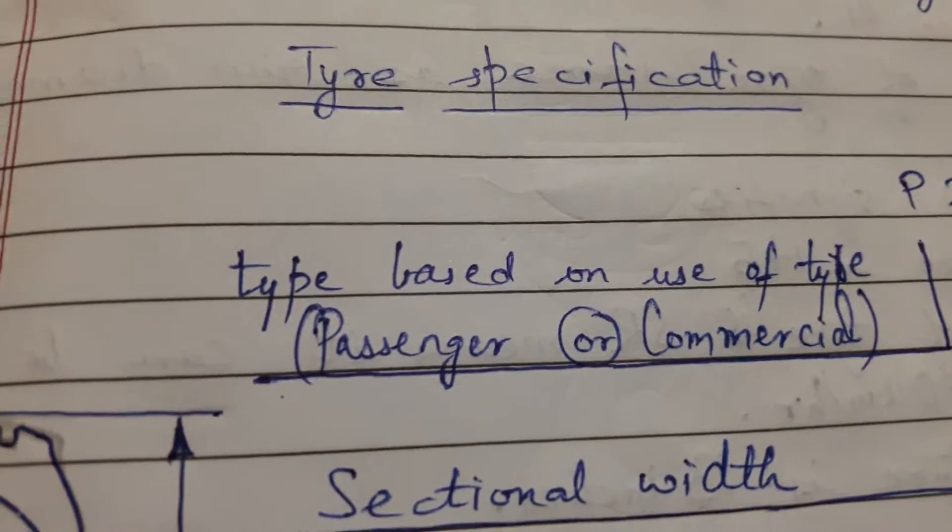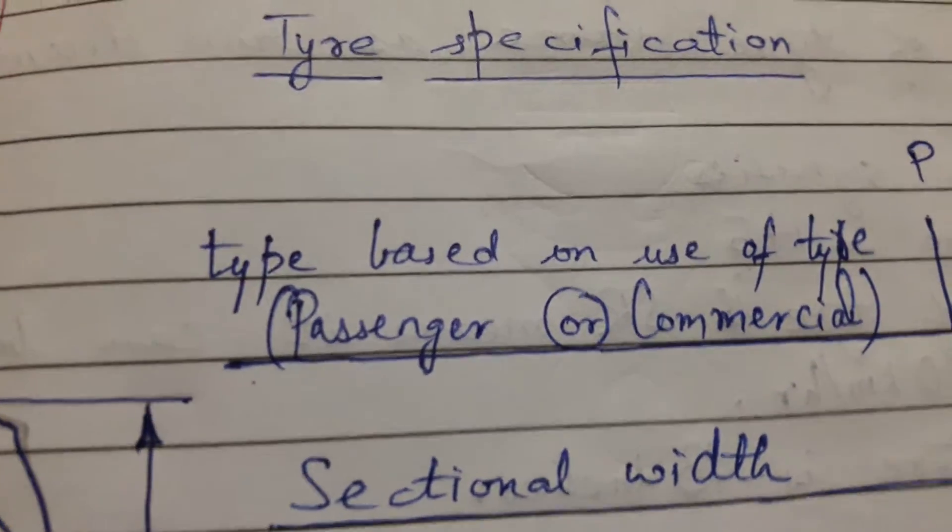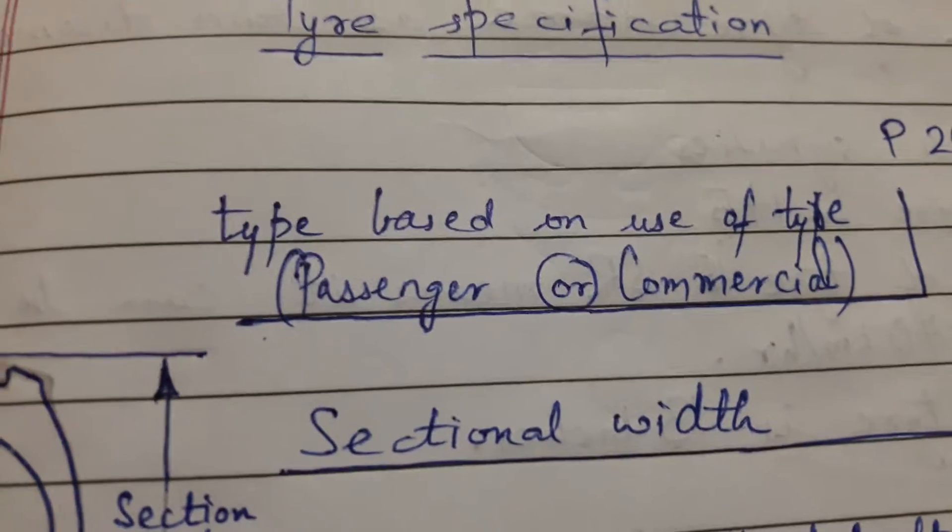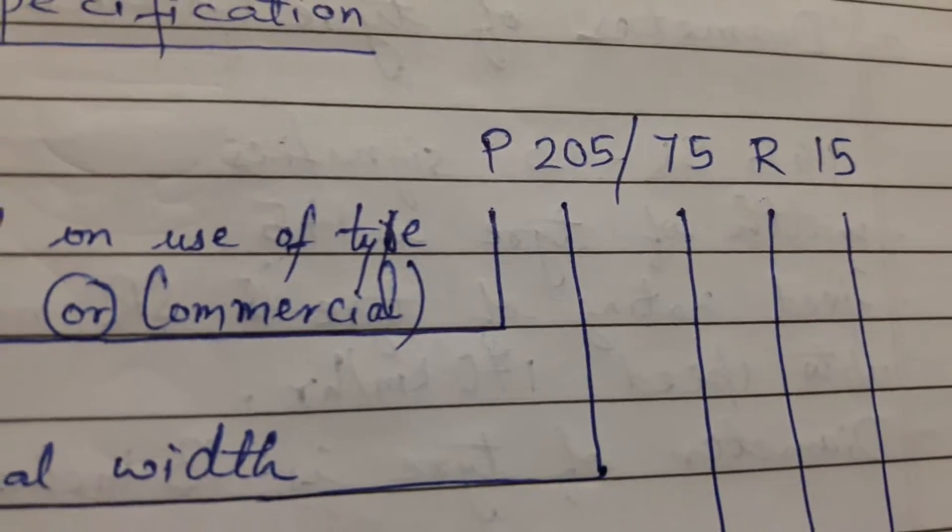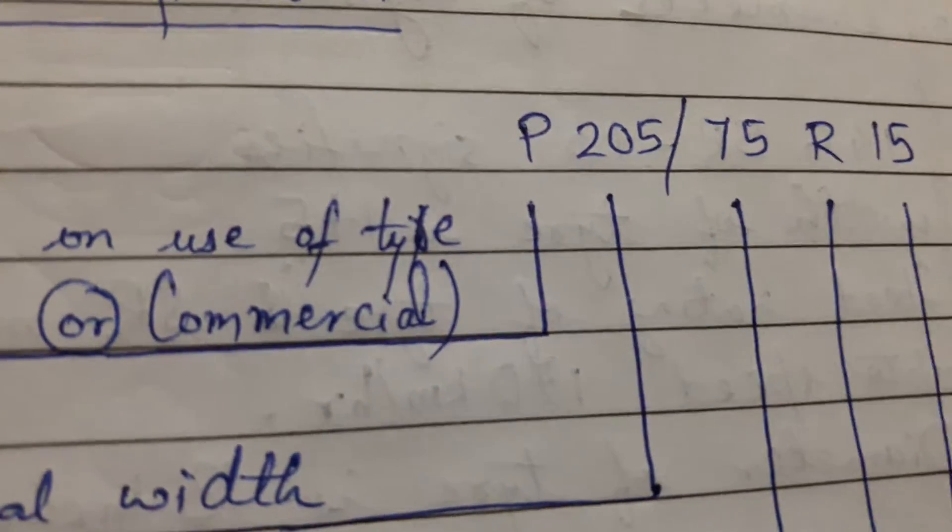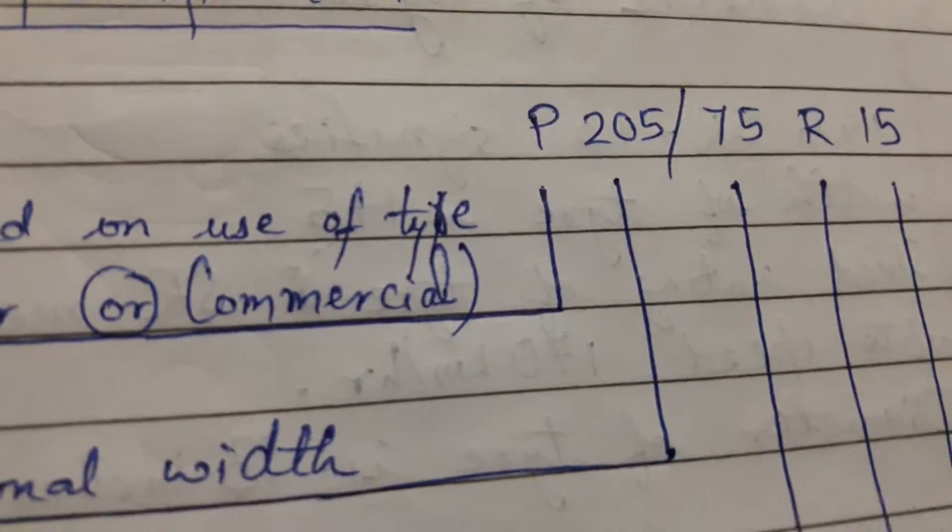Now we will be studying the tire specification. We will study by taking one example: P205 slash 75R15.